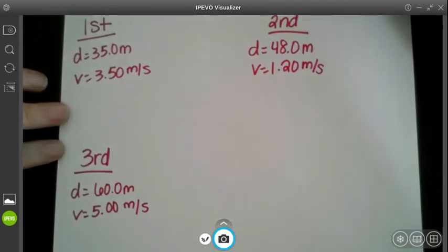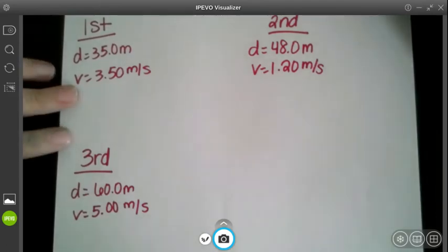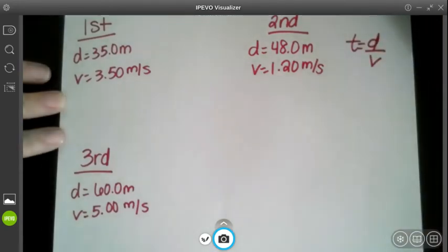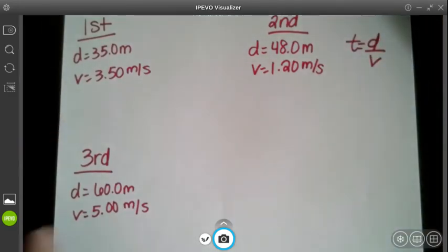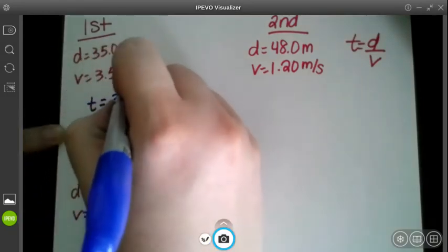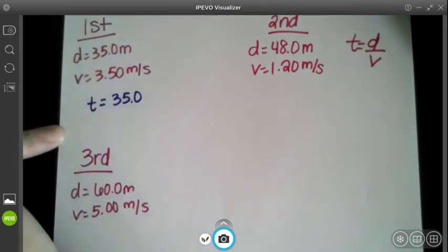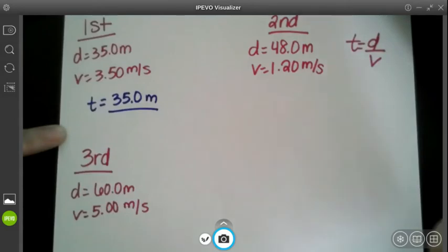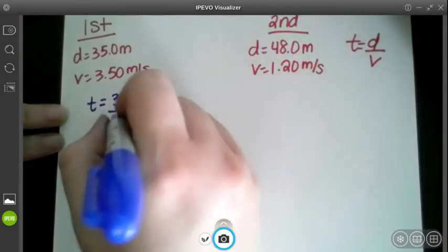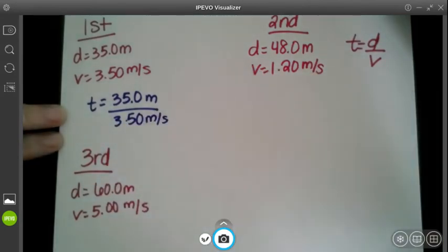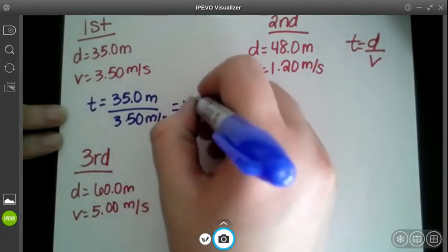Does Suzette make it to class on time, or does she get detention for being late again? We're using the same equation each time. We're using t equals d over v. So let's solve for each one of these. I want you to solve these on your own, and then see how you did. So hallway number one, she travels 35 meters at 3.5 meters per second. So the time it takes her to get down hallway number one is 10 seconds.